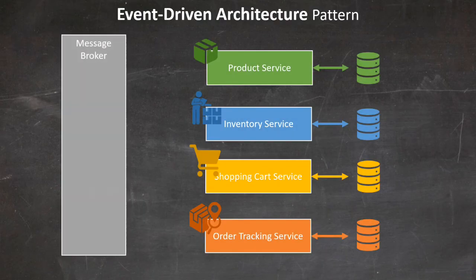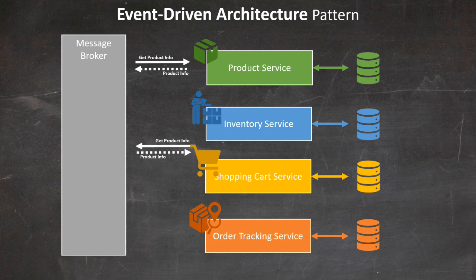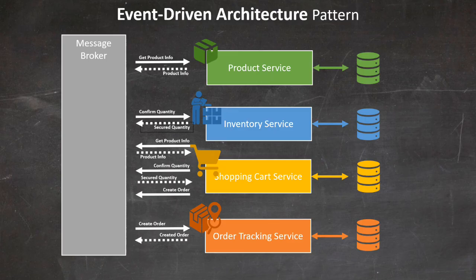Let's front our services with a message broker and consider the scenario where an end-user places an order via the shopping cart. The shopping cart service will send a notification to the message broker asking for the product information currently in the cart. The product service, subscribing to the get-product-info message, will act and respond, publishing a product info message for the shopping cart to consume. The shopping cart will then confirm the quantity and, once confirmed, create the order. In AWS, you can implement this pattern using Amazon EventBridge or Amazon Simple Notification Service and Simple Queue Service.